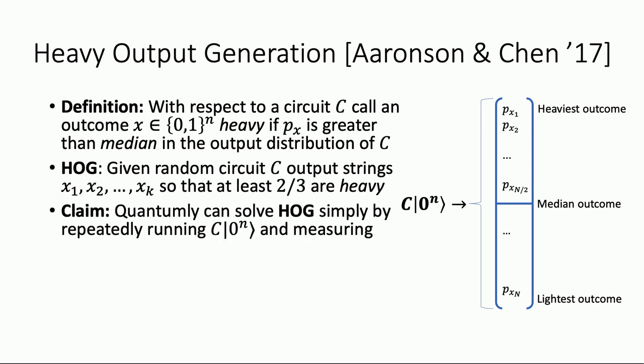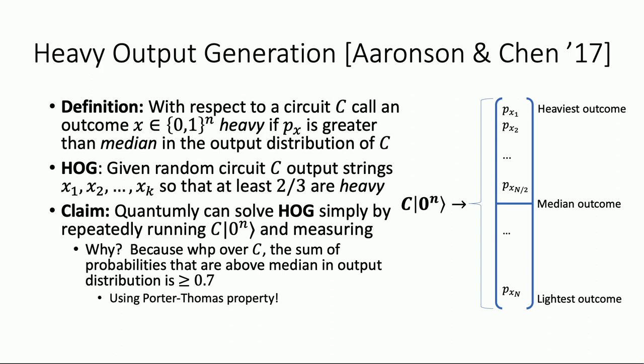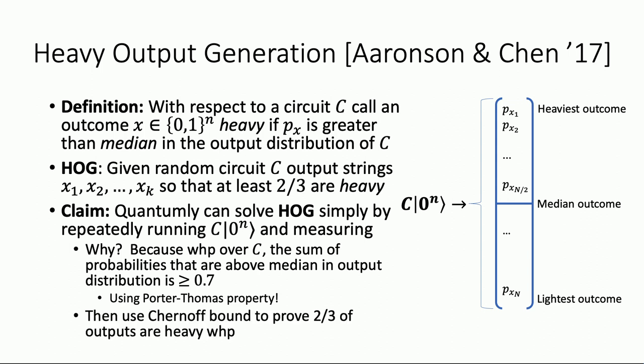This is something we can do with a quantum computer simply by taking the random circuit, running it on all zeros, and measuring many times. This uses the Porter-Thomas distribution, because notice this would be clearly false for lots of different circuits — there's no reason the median would have to be so large. But using the Porter-Thomas distribution, with very high probability over the choice of circuit, the mass above the median is bounded by a constant away from half, like 0.7. Then we use a Chernoff bound to show that at least two-thirds of the outputs are heavy with high probability — it's like flipping a biased coin and estimating the bias.